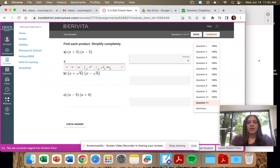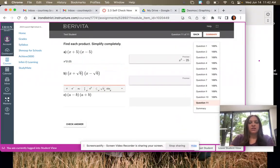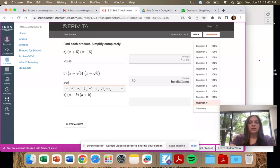Let's type them in. X squared minus 25. X squared minus 6.